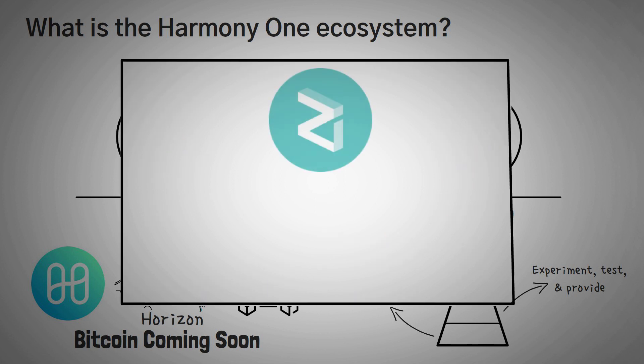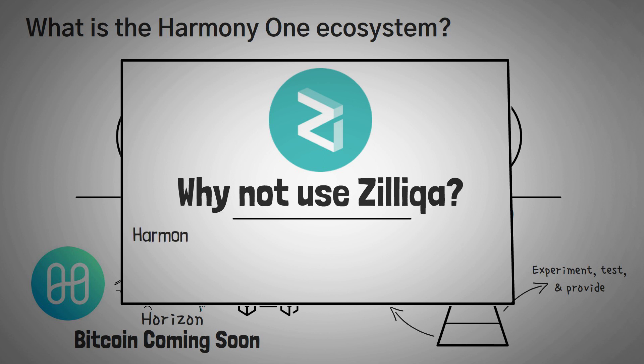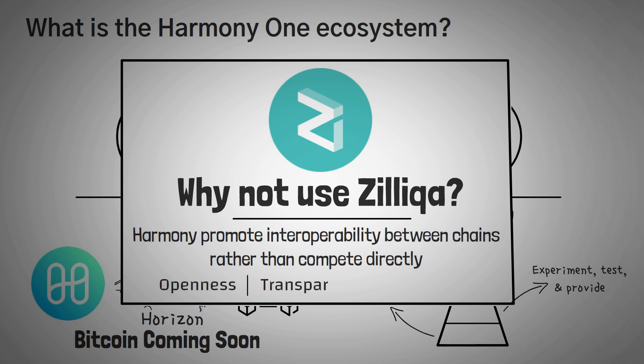Now, some of you might be pointing out, why not just use Zilliqa? The answer to this, and to avoid potential competition with Polkadot, is that Harmony actually lives up to its name and tries to promote interoperability between chains rather than competing directly. They shy away from the siloed nature of some blockchain projects in favor of openness, transparency, and camaraderie, which we can actually see with their emphasis on promoting DAOs.